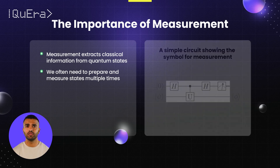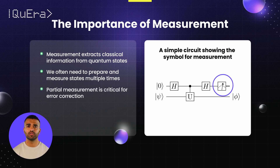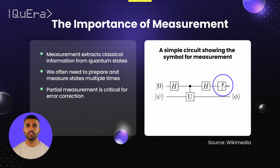A simple quantum circuit on the right shows the symbol for quantum measurement. In addition to full system measurements, partial measurements — where only a subset of qubits within a quantum system is measured — are key to quantum error correction codes.